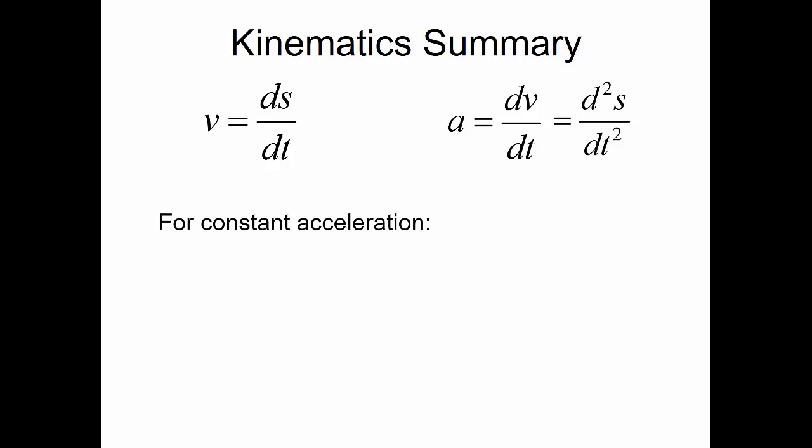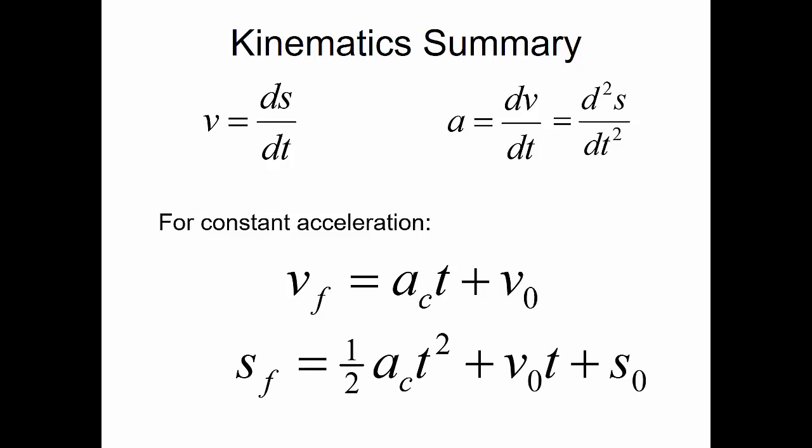For constant acceleration, we determined that our final velocity is equal to the constant acceleration times the time plus the initial velocity, and that our final position is equal to one-half the constant acceleration times the time squared plus the initial velocity times the time plus our initial position.